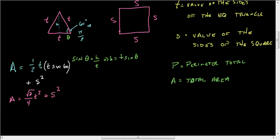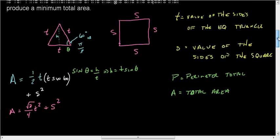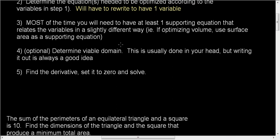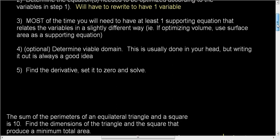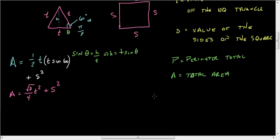Well, I've got S's and T's, I can't really have that. So I'm going to have to come up with some kind of an auxiliary equation, or some kind of a supporting equation. That's step three. We know that the total perimeter is 10, but the total perimeter is actually 3T plus 4S. Add up all the sides.